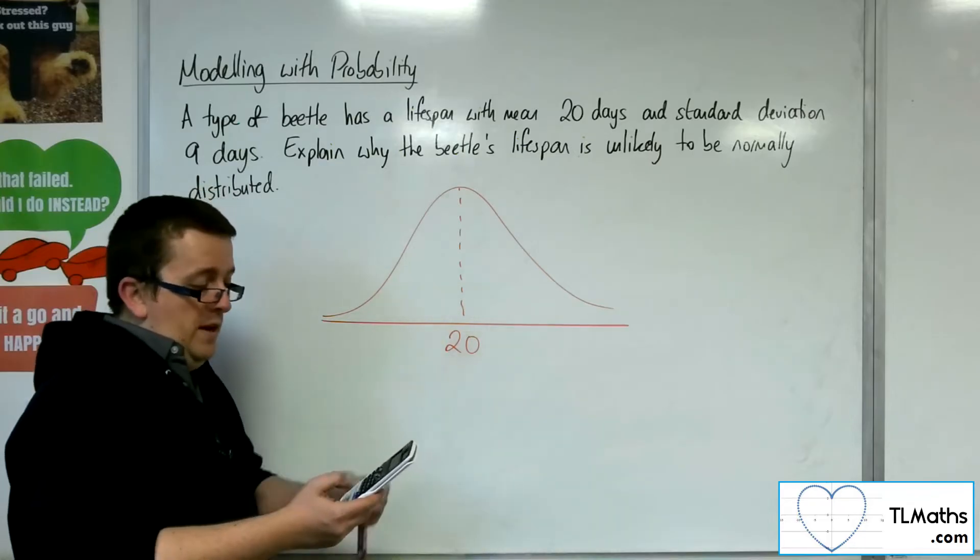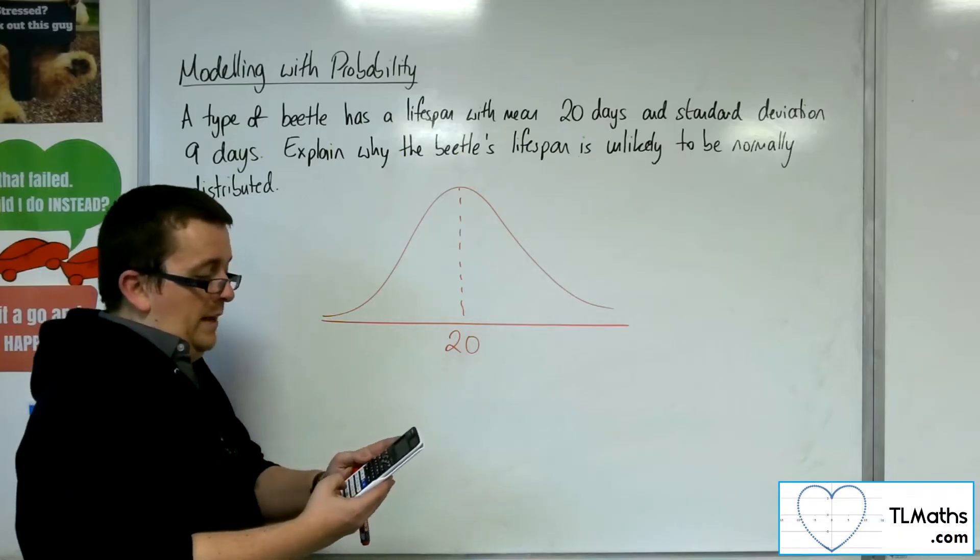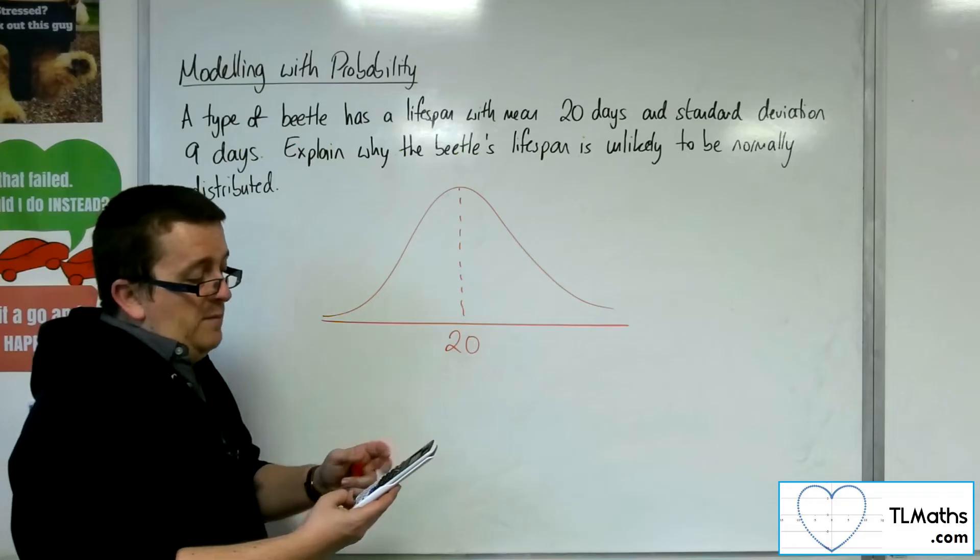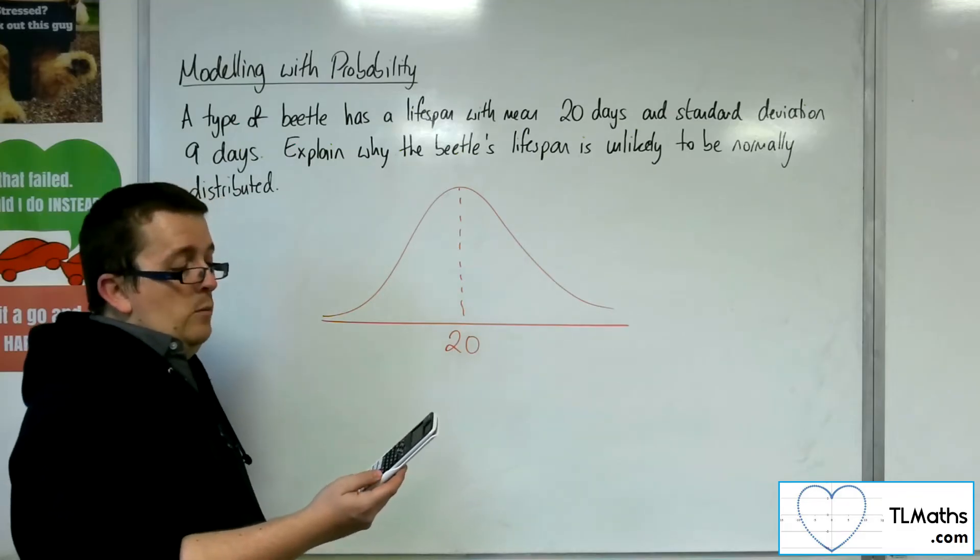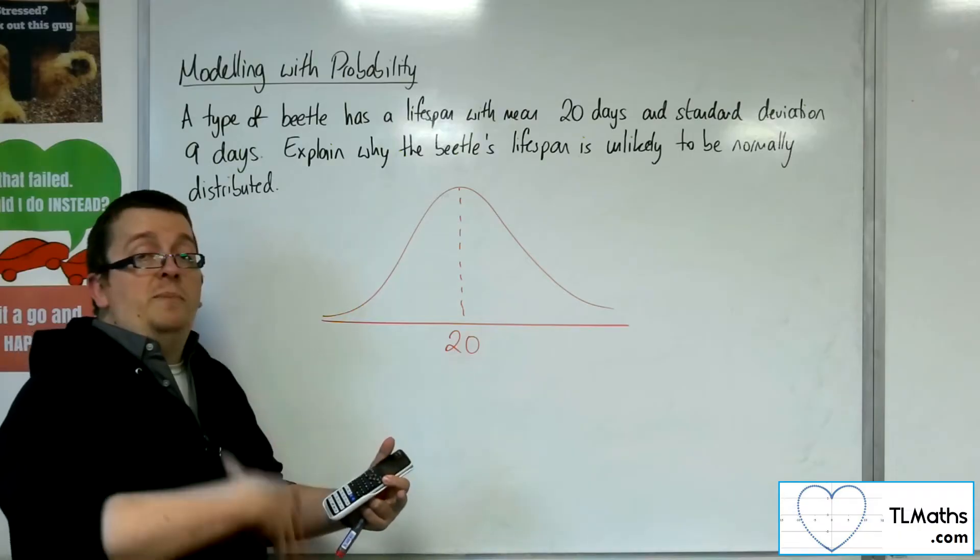If you just want to type in the lower as minus 3 and the upper as 3, and leave sigma as 1 and the mean as 0, then what you've done is you've found the probability of being within three standard deviations of the mean.